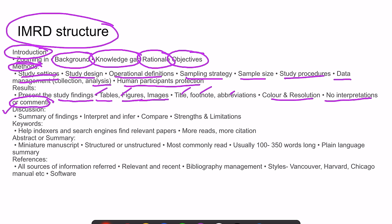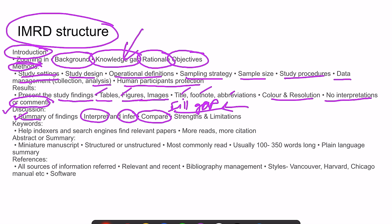In the discussion section, we first summarize — not repeat — the findings, then interpret the results, find reasons for differences and similarities, obtain inferences, and compare with other studies. We ultimately aim to fill the knowledge gap identified in the introduction. Strengths, limitations, recommendations, and possible bias should all be mentioned in the discussion.